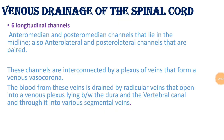The venous drainage of the spinal cord consists of six longitudinal channels: anterior median and posterior median channels that lie in the midline, and anterolateral and posterolateral channels that are paired. These channels are interconnected by a plexus of veins that forms the venous vasocorona.